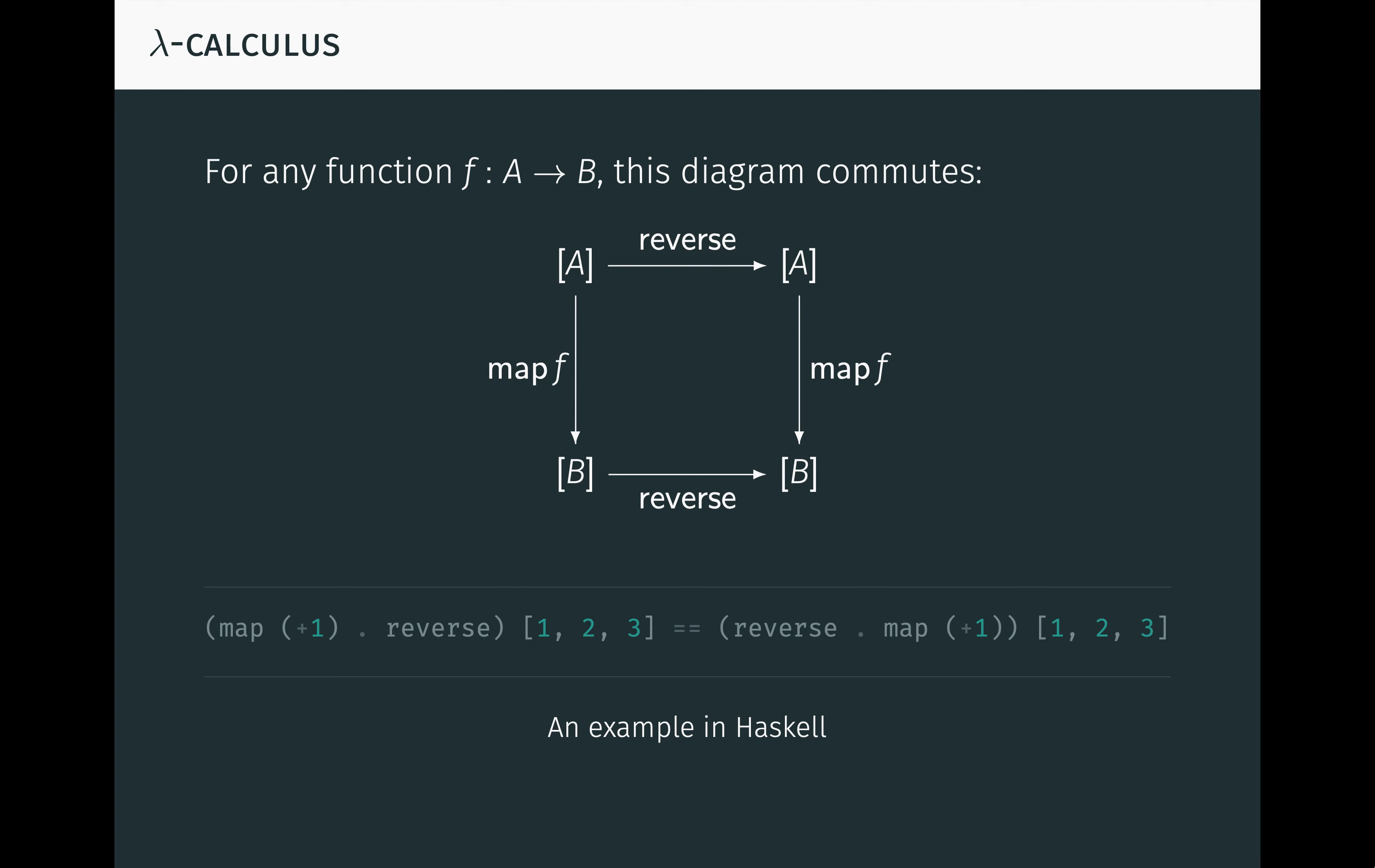Here's an example in Haskell showing how we can reverse and increment a list of numbers in either order. We get the same list, 4, 3, 2, either way, so this line of code evaluates to true.